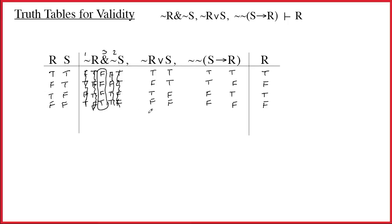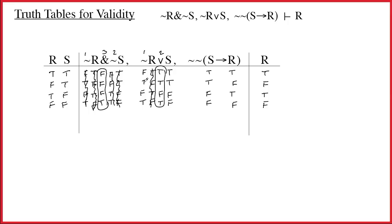Second premise. Main connectives last, so tilde first then the wedge. The tilde of R gives false-true-false-true. Cross it off. The wedge rule: true output if at least one input is true. False-wedge-true is true, true-wedge-true is true, false-wedge-false is false, true-wedge-false is true. Circle the wedge as the main connective.